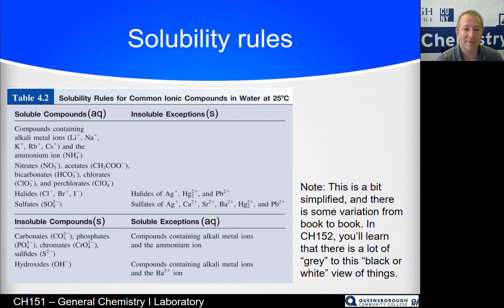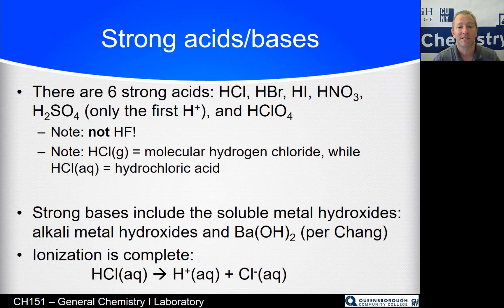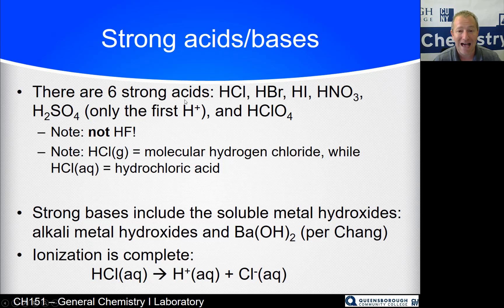Some other possibilities for strong electrolytes are strong acids or bases. These are mostly molecular compounds — gas-phase molecules that, when dissolved in water, will fully ionize. Every single HCl molecule that goes into water will fully ionize to H⁺ and Cl⁻. There are only six strong acids: the halogen acids HCl, HBr, and HI — but not HF, which is a weak acid.